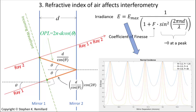Every time the mirror separation increases by delta d, the irradiance has a peak, and the refractive index of the medium can be computed.